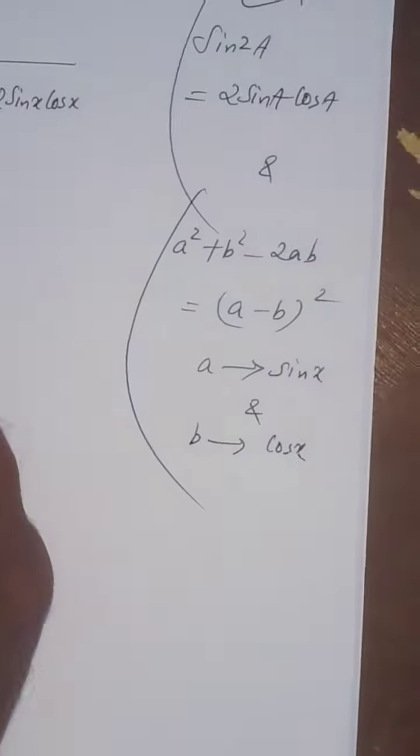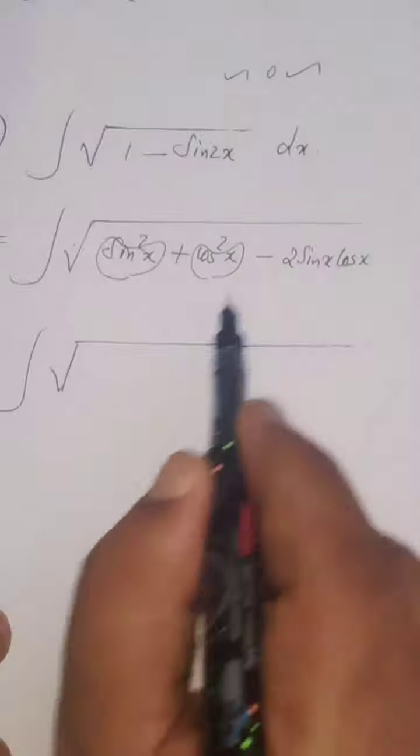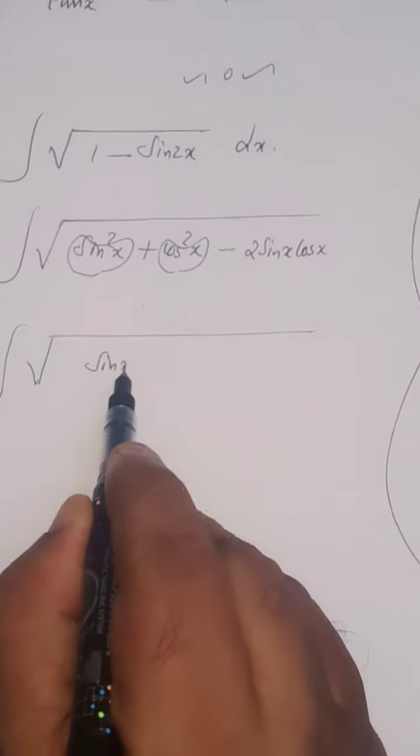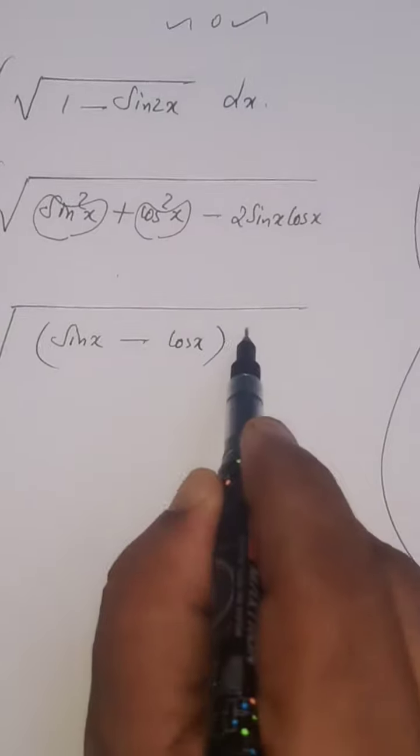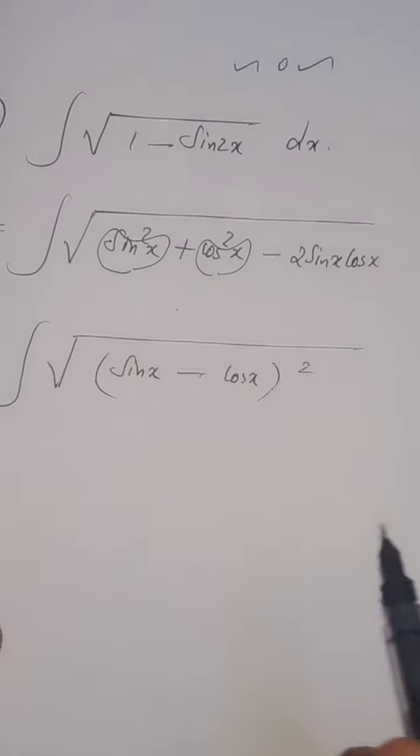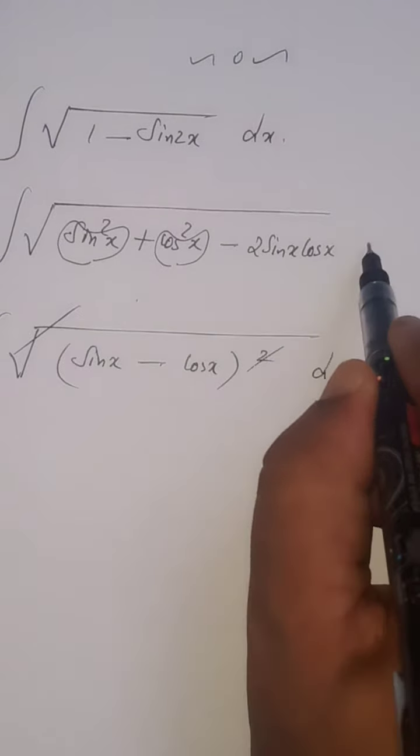Square root of the whole expression can be written as sin x minus cos x the whole square. Square root and square get cancelled, so we have to write dx at the last.